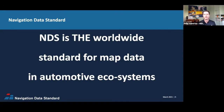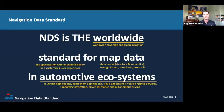Over 30 automotive OEM brands are using NDS maps today. NDS offers worldwide maps and is globally adopted. It offers a well-defined spec for how to store map data and allows flexibility for customized user experiences. The NDS specification covers the data model, storage format, interface, and protocols. NDS is specifically for in-vehicle navigation and ADAS with drive automation, for mobile companion apps, connected car, and cloud solutions. It evolves with what the market needs — NDS is for the automotive industry by the automotive industry.